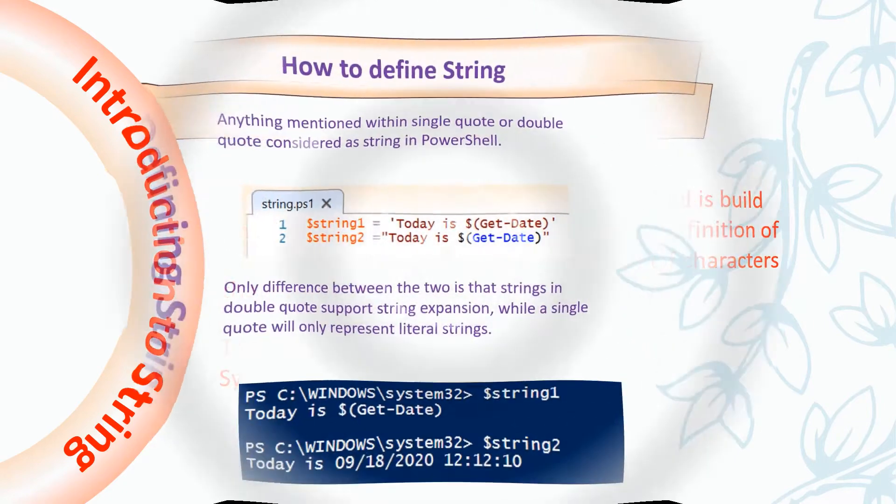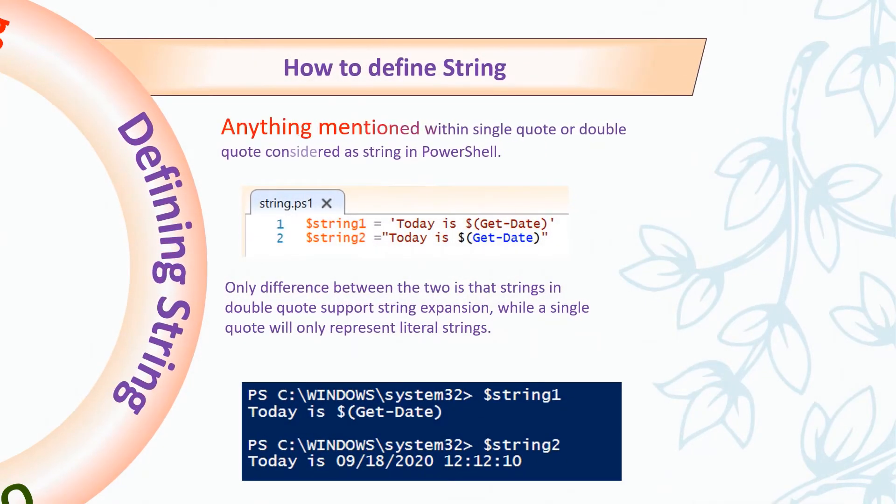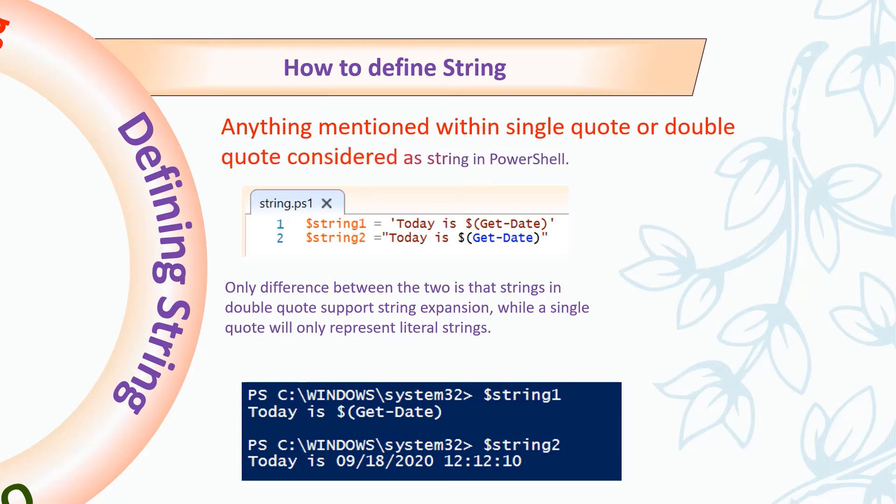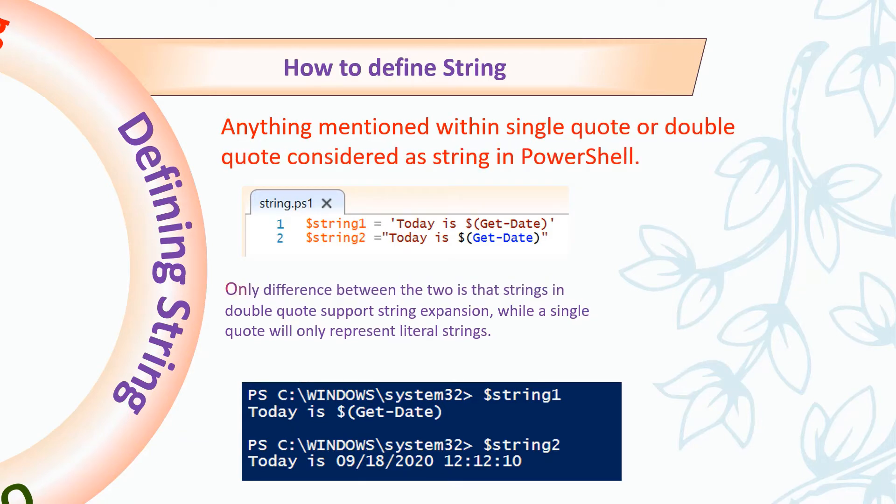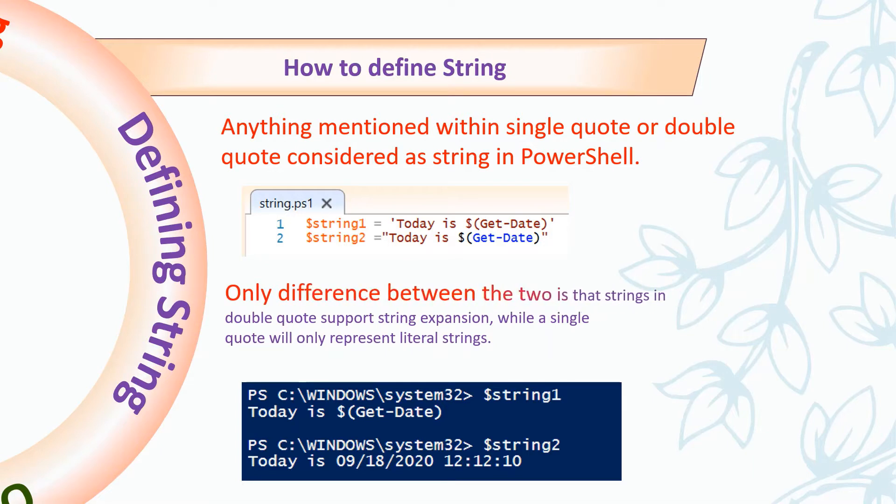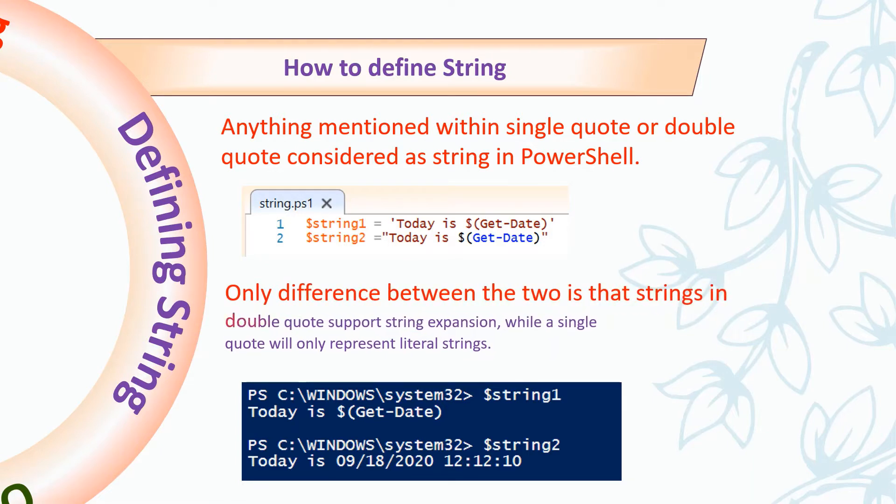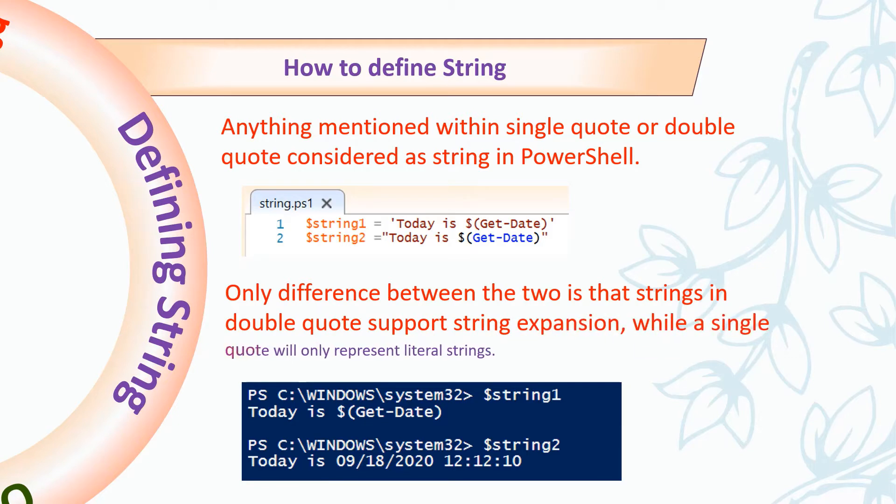Let's move to how we can define String in PowerShell. Anything within single quote or double quotes is considered as String in PowerShell. The only difference between the two is that String in double quotes support String expansion while a single quote will only represent literal strings, as you can see in the screenshots.